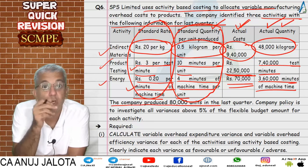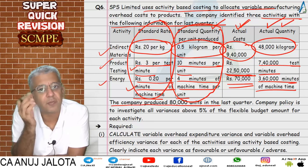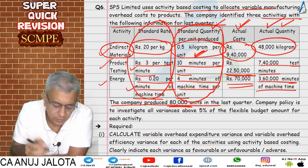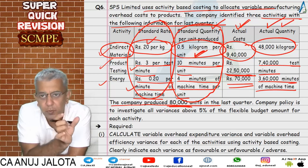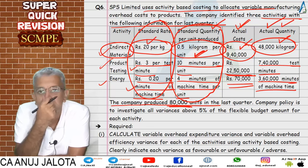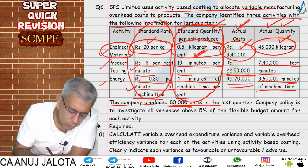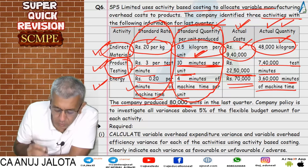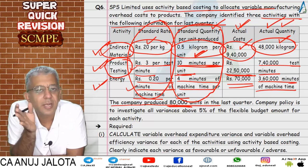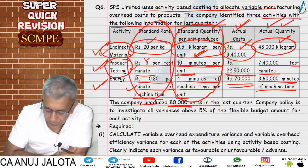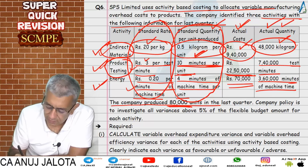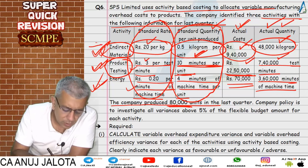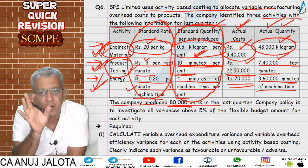The company produced 80,000 units in the last quarter, so actual output is 80,000 and revised standard is also prepared for 80,000. For indirect materials: 0.5 kg per unit means 40,000 kg for 80,000 units at rate 20, so revised standard amount is 40,000 × 20. Actual was 48,000 kg at actual cost. For product testing: 10 minutes per unit means 8 lakh minutes for 80,000 units at rate 3. Then compute all three variances — separately for each activity.